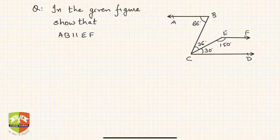In this question, a figure has been given and few angles have been shown. We have to prove that AB is parallel to EF. So how do we think and how do we approach this problem?